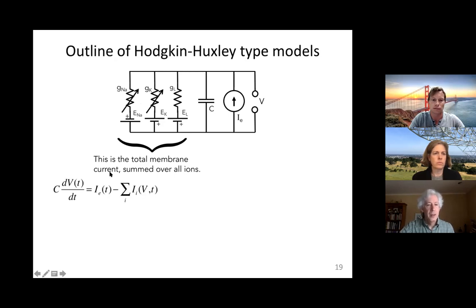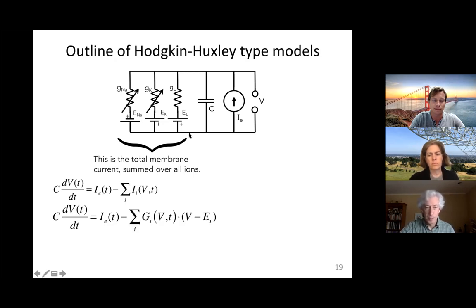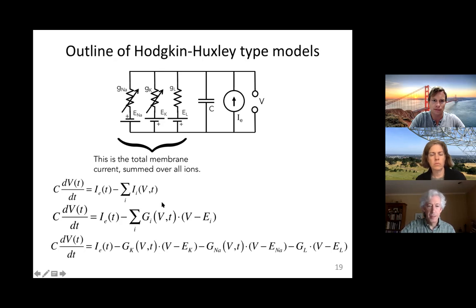We extend our equivalent circuit a bit more — there are a few more conductances, and a couple will change with voltage. Our equation extends to: C dV/dt equals the injected current minus the ionic current, but the ionic current is now a sum of all the different ions — sodium, potassium, plus a leak current. Each conductance can depend on the voltage and change over time. In the case of sodium and potassium, each has a conductance that changes over time depending on voltage, multiplied by its own driving force — the difference between voltage and its equilibrium potential. There's also a steady leak conductance that can generate a current.